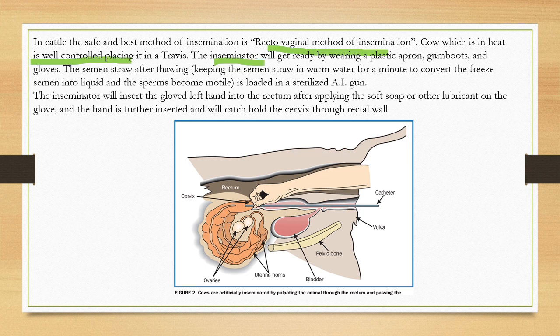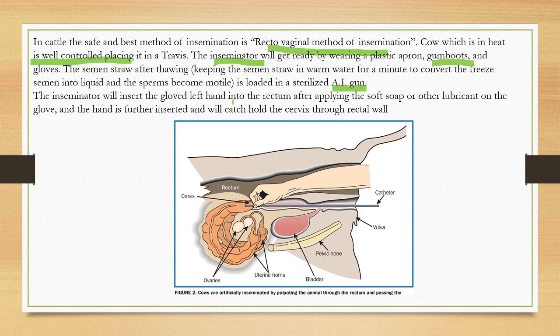The inseminator gets ready by wearing a plastic insemination glove, a plastic apron, gum boots, and a collar board. The semen straw is loaded into a sterilized artificial insemination gun. The inseminator inserts the gloved left hand into the rectum of the cow.